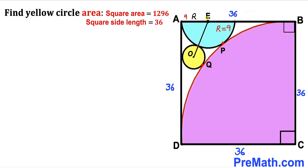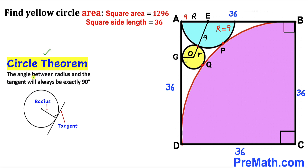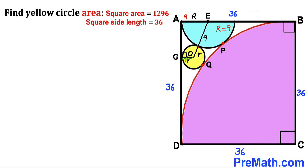Here's our next step. I have connected center E with center O. The length EP is the radius of the blue semicircle, so this is 9. The radius of the tiny yellow circle is labeled lowercase r. I have also connected center O with the point of tangency G. By the circle theorem, the angle between the radius and the tangent line is always 90 degrees, so this angle is 90 degrees, and OG = r.